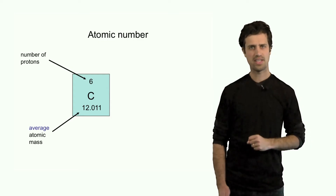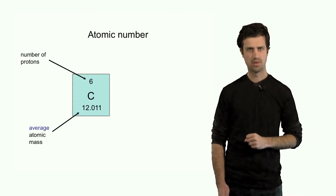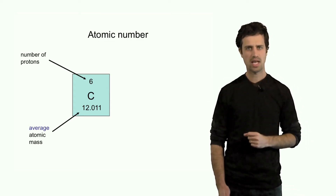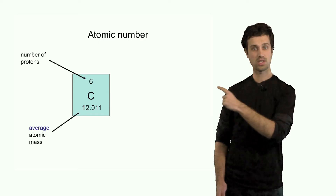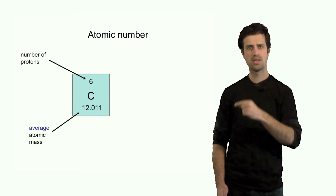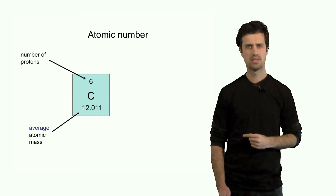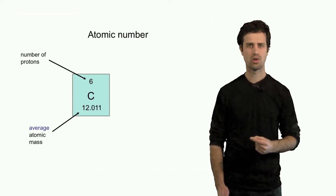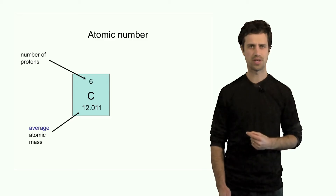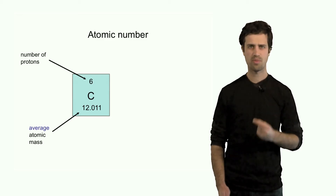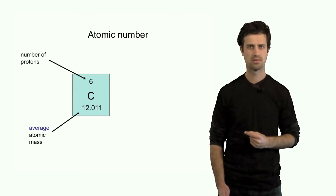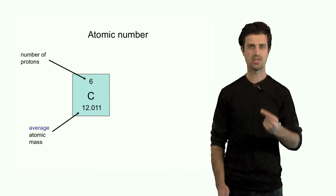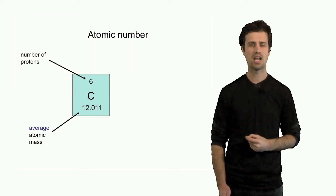This is what you find in a periodic table. An abbreviation of each element — in this case carbon, capital C — with a number above it. That number is called the atomic number; it represents the number of protons. Again, the number of protons defines the element.